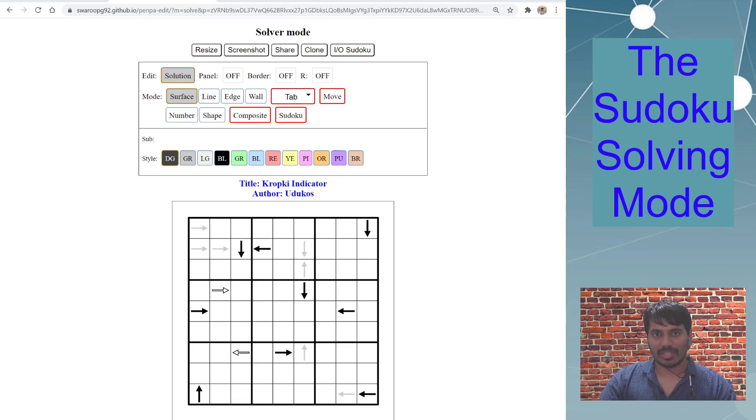The main focus is on using the Sudoku solving mode. Once this puzzle is loaded on your page, you can see the mode section with different modes. I have covered some of these in my other videos. This one I'm focusing on is Sudoku, which is just beside composite. Once you click the Sudoku mode, it's similar to other tools and offers three sub-modes: normal, center, and corner.